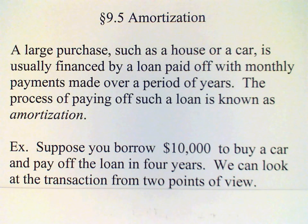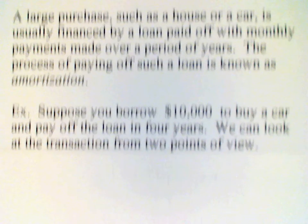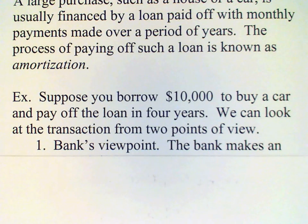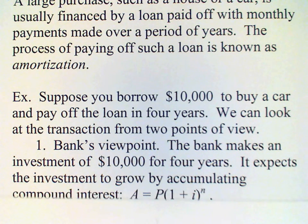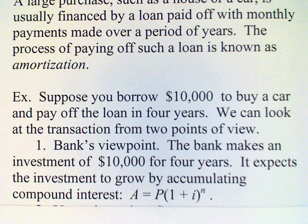We're going to look at this transaction from two points of view. First of all, from the bank's viewpoint: the bank is making an investment in you and expects a return on its investment, which is ten thousand dollars. Ideally, that investment will grow by accumulating compound interest, so we know the formula A equals P times one plus i raised to the n.